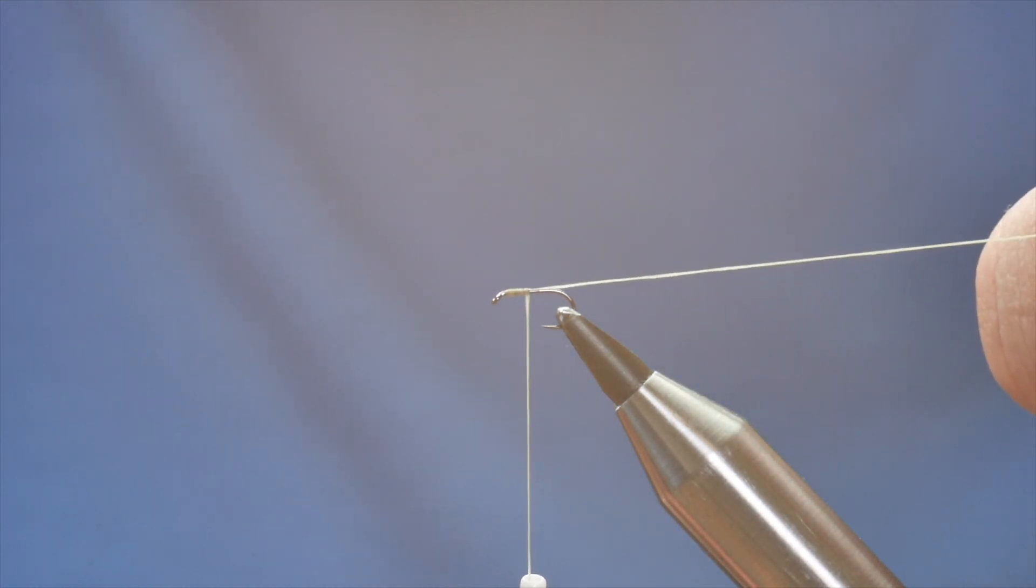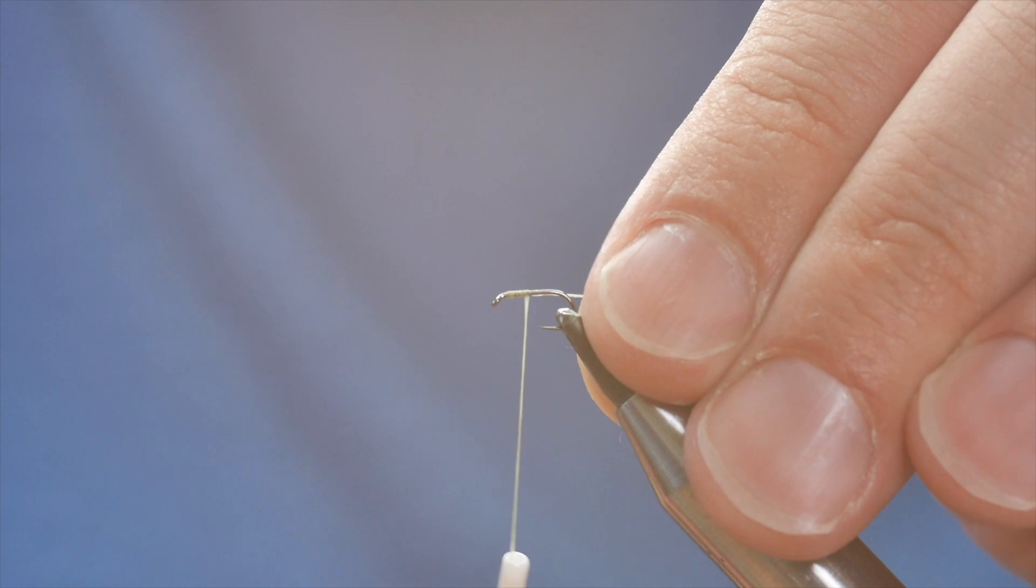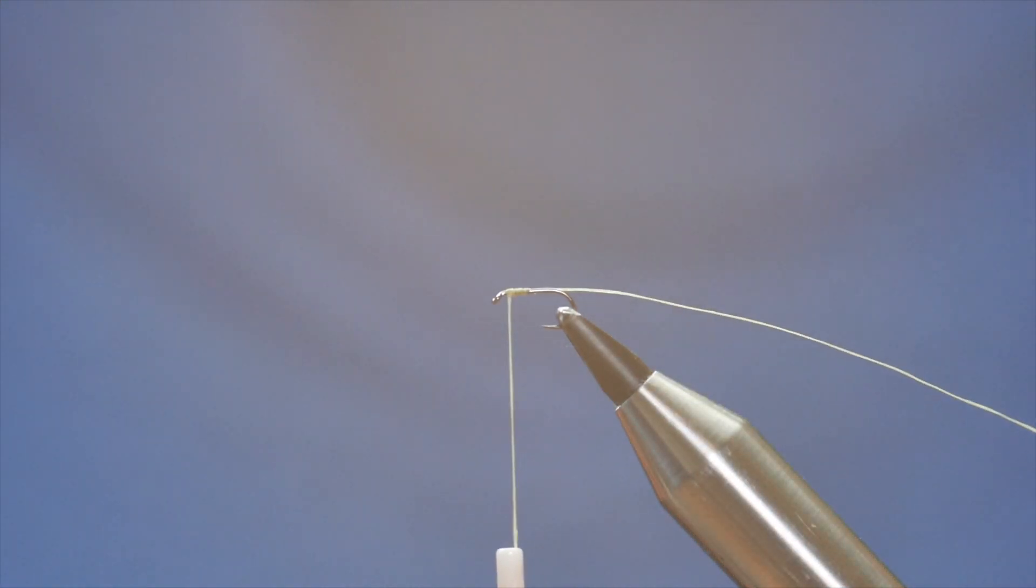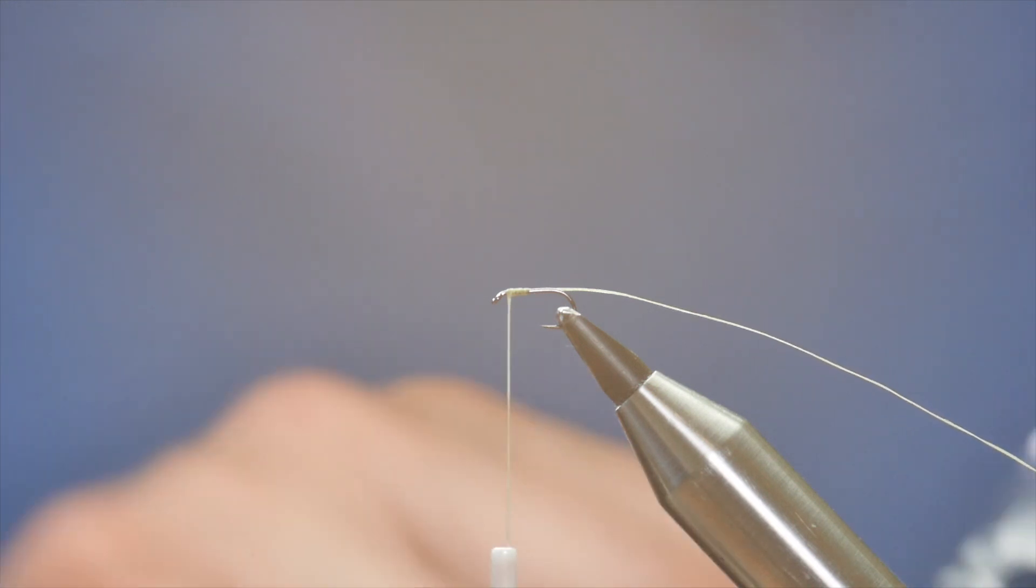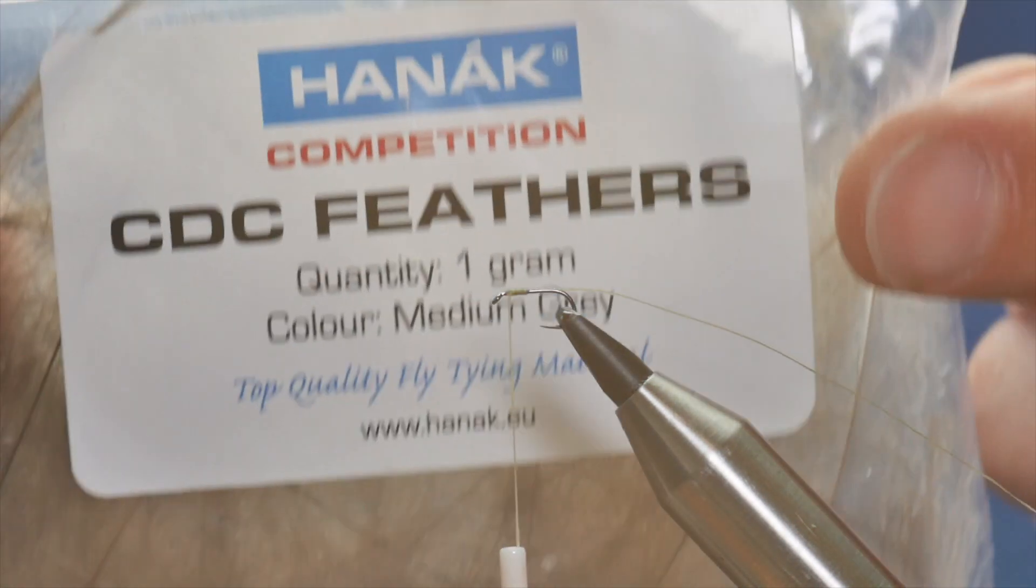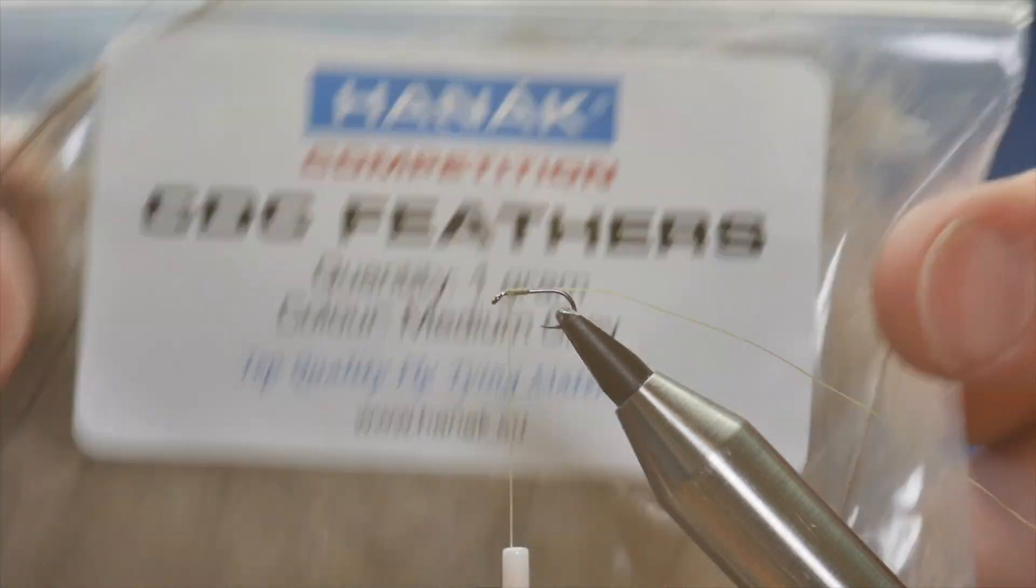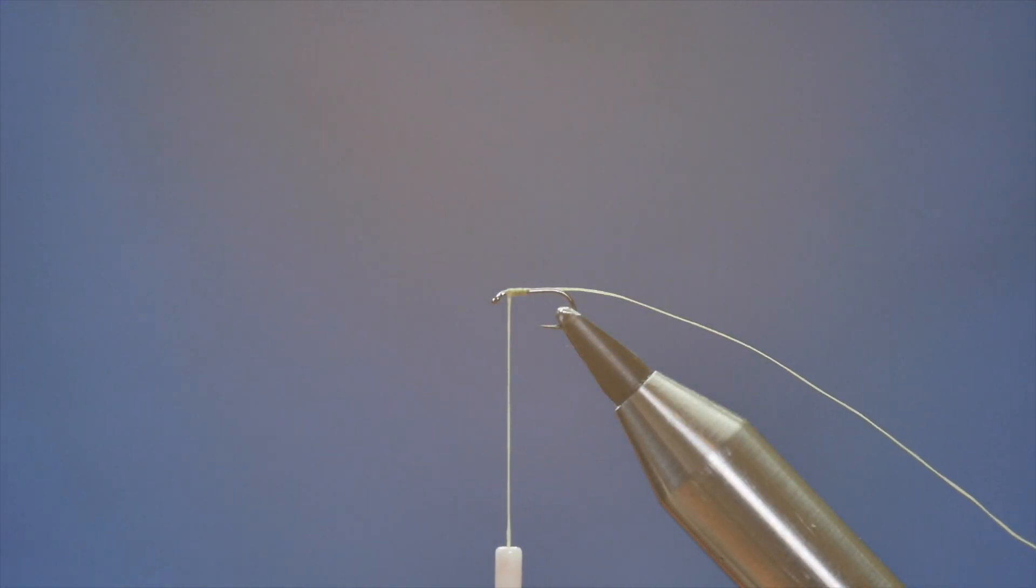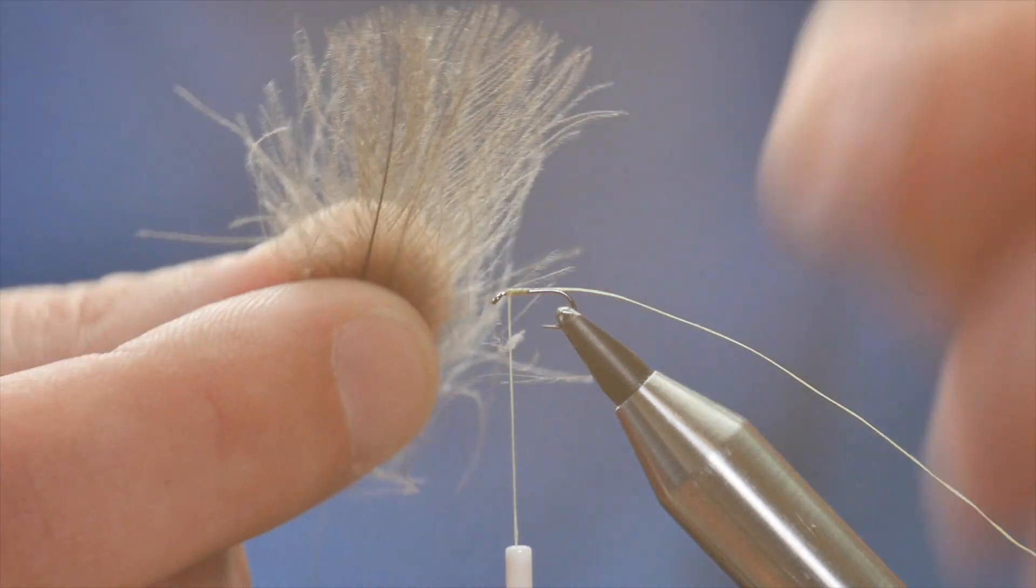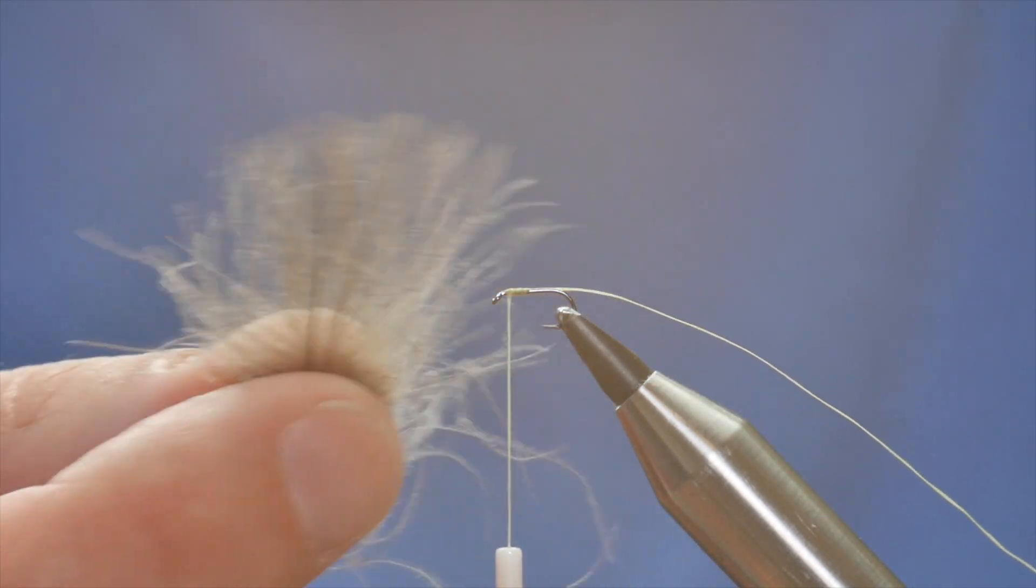Now my rat's tail, I've left it fairly long because I'm going to use that for the ribbon later on. So I'm going to come back up here and as the name suggests, plume tip, I'm going to use a couple of CDC feathers. These are the Hanak ones, and I've already pre-selected a couple of feathers.